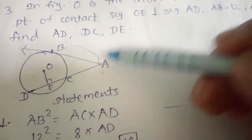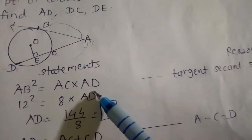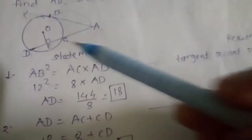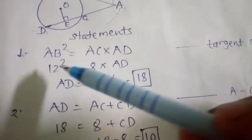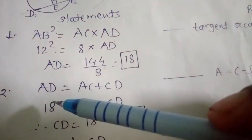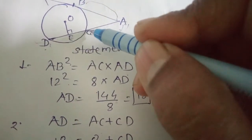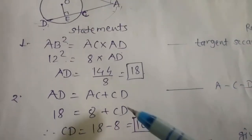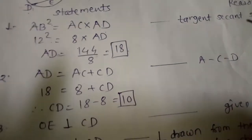So 12² = 8 × AD, giving 144 ÷ 8 = AD = 18. Since AD = AC + CD, we get 18 = 8 + CD, so CD = 10.